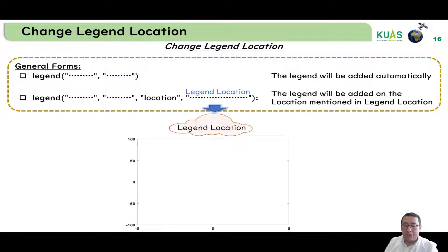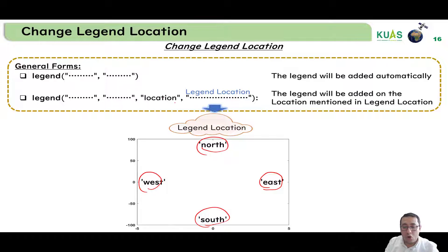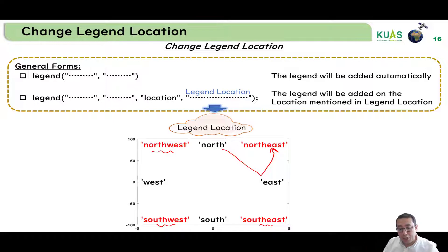For the legend location, we have different location names. For example, east, west, south, and north. If we need to put the legend in a corner, we can use combinations: north east, north west, south west, and south east. Based on your preference, you can select the location you need and write it in the legend call.